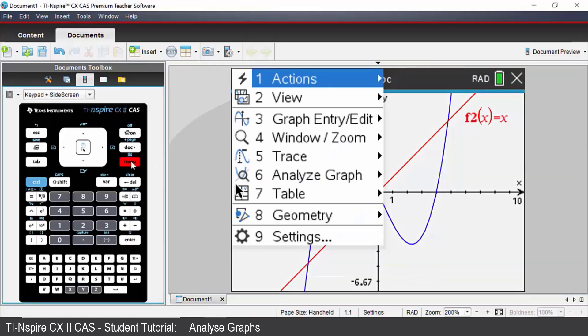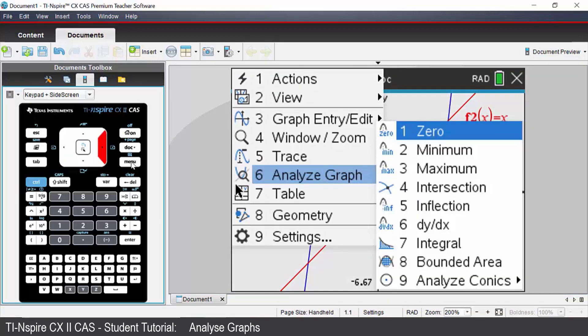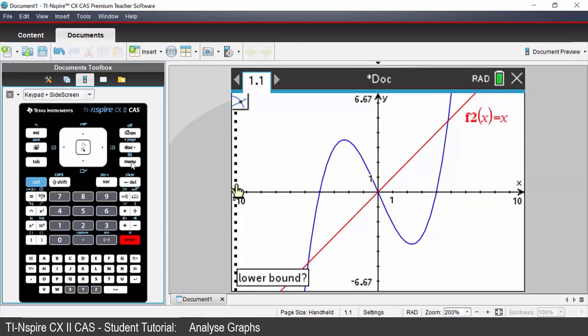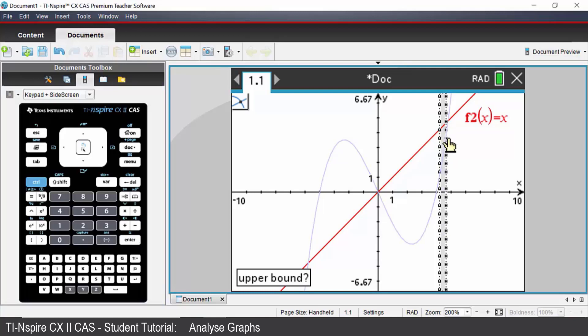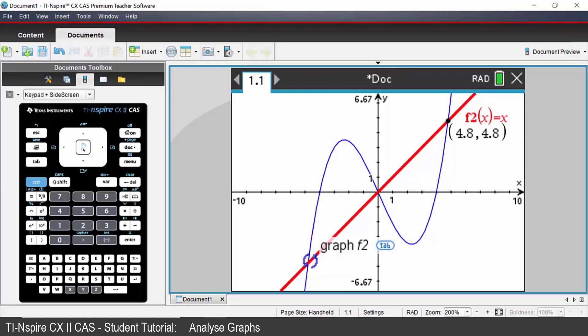Come down to analyze graph and we're going to choose option 4 which is intersection. Lower bound, once again you would click just on the left of your intersection point. Click just on the right and it will give you the coordinates of that intersection point. Likewise you could have found the other two intersection coordinates also.